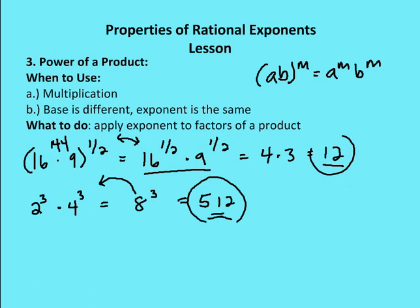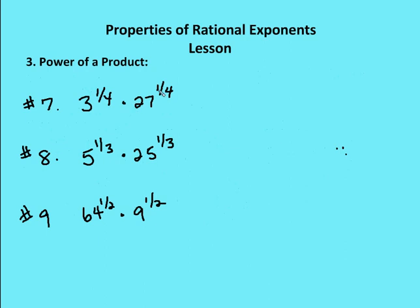Let's do some problems. I have 3 to the 1 fourth times 27 to the 1 fourth. I'll use power of a product: multiply 3 times 27 to get 81, then take that all to the 1 fourth. I figure out that 3 to the 4th equals 81. So the answer is 3. Typically, I take care of taking the roots of a given value first — analyzing the denominator of the exponent first — then raise it to the numerator power.